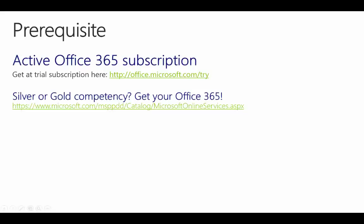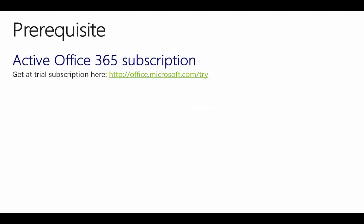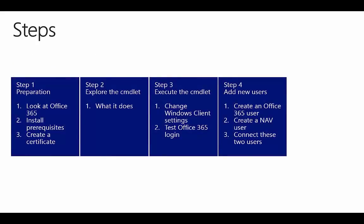Before you can start, you need an Office 365 subscription. If you don't have one, you can create a trial account from this address. We have 4 easy steps. First, we will look at Office 365 and introduce why it is possible to use Office 365 users to login to Microsoft Dynamics NAV 2015 and how to prepare the environment. The next step is to learn what steps the PowerShell commandlet performs. In the third step we will actually run the script and test the login.